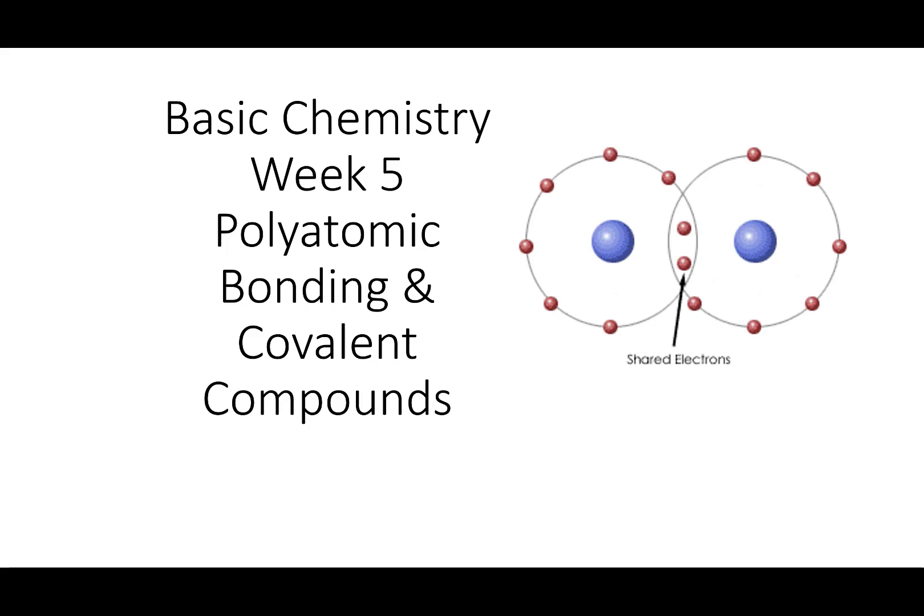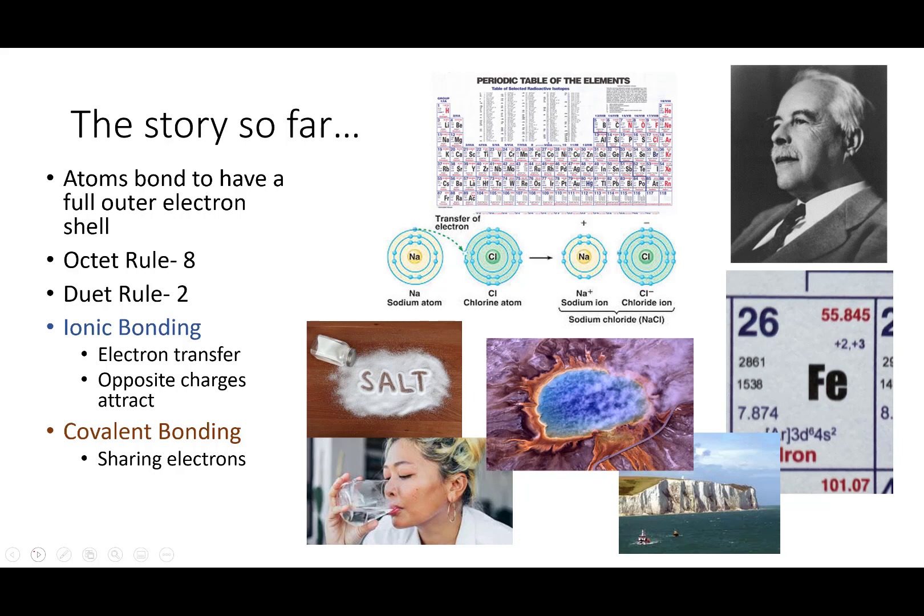Hello, everybody. It is week five in our chemistry class, and we have two primary topics this week: polyatomic bonding, how do you do ionic bonding with polyatomic ions, and we're going to talk some about covalently bonded compounds. But let's get a running start.